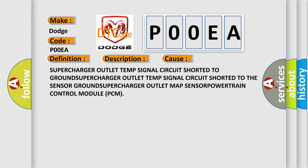This diagnostic error occurs most often in these cases: Supercharger outlet temp signal circuit shorted to ground, Supercharger outlet temp signal circuit shorted to the sensor ground, Supercharger outlet MAP sensor, or Powertrain Control Module PCM. The Airbag Reset website aims to provide information in 52 languages.